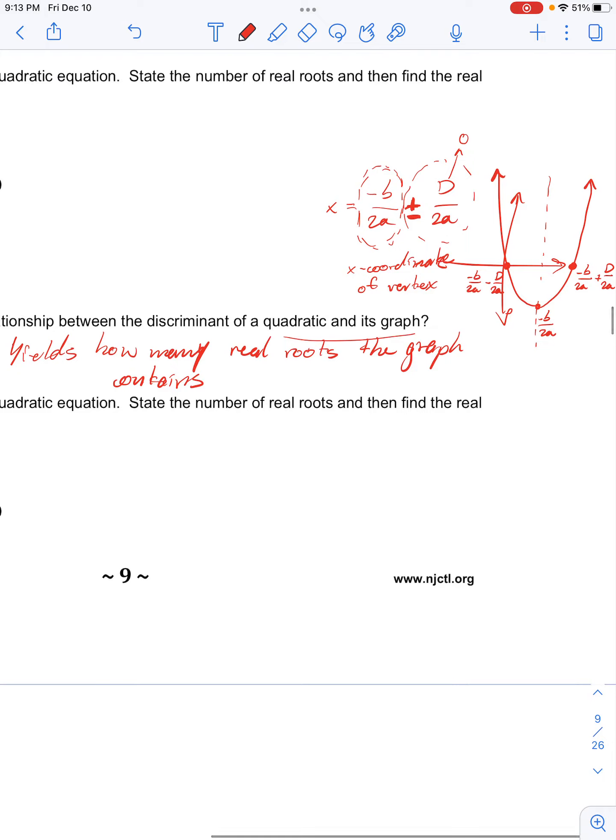And of course, it could never be negative because the discriminant, the value underneath the square root, can never be negative. So, the discriminant always has to be greater than or equal to 0.